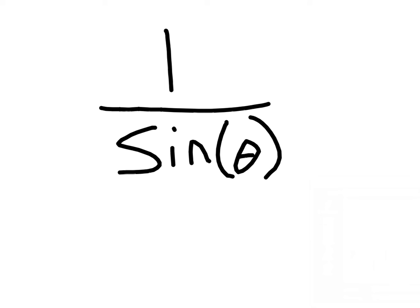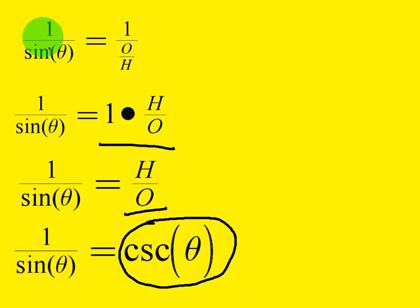Well, it turns out it's going to be a very similar proof that we looked at before. 1 over sine of theta. Now, if you recall, the definition of sine is opposite over hypotenuse. So we're going to replace sine with its definition for the first step of the proof.